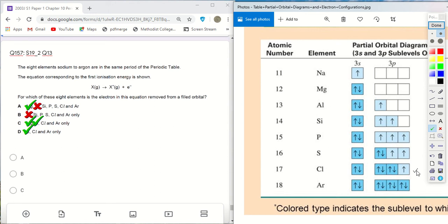Now chlorine, chlorine also, we are removing electrons from filled orbital. So the last one, this argon, the noble gas. Also, if we want to remove the first electron, remove from a filled orbital.